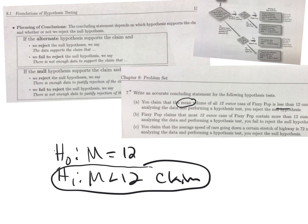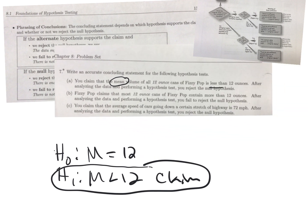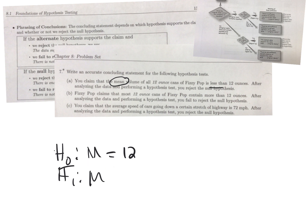Back to Fizzy Pop again - I'll reuse what I wrote, but they say most cans contain more than 12 ounces. The way this is worded, they're talking about a larger percentage, not the actual mean volume. I don't think this is about means, I think this is about proportions.